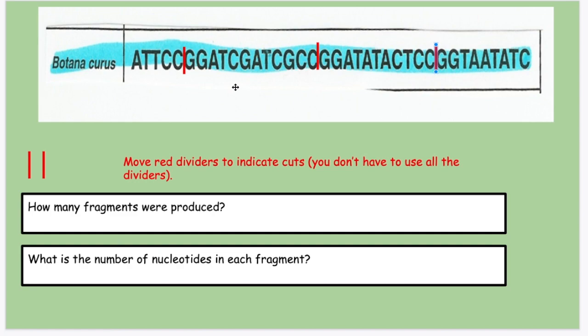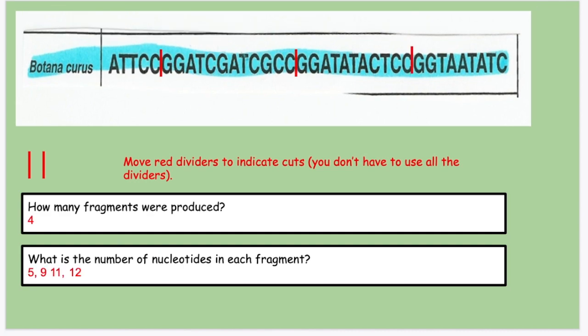So you just count them up. This one's one, two, three, four, five, so on and so forth. To answer the questions here, there's four fragments that are produced, and the number of nucleotides in each fragment, we have five, nine, eleven, and twelve. That's the varying lengths of the fragments.